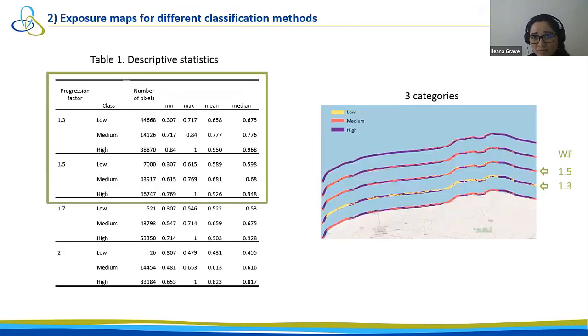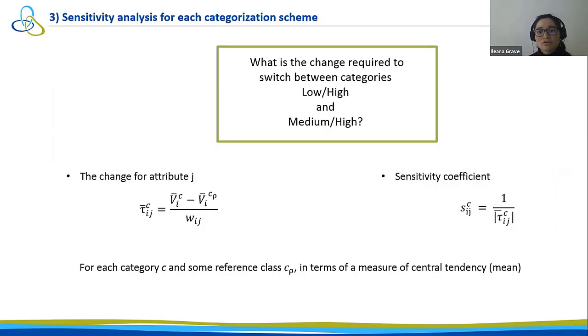The second step was to obtain different maps for different classification methods. We have in this case for the three categories, five maps. If we see the statistics, we can see that the most heterogeneous one in the number of pixels are progression factor 1.3 and 1.5. We are using the Weber-Fechner Law for these categorizations. We also can see that the mean and median value are not so different, so we can use the mean as a measure of central tendency.